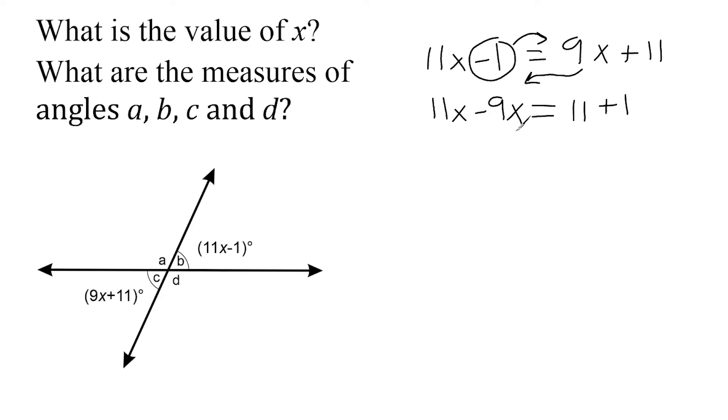Now we're in a situation where we can combine like terms. So when we combine our x terms, 11x minus 9x, we get 2x. And when we combine our constants, we get 12.